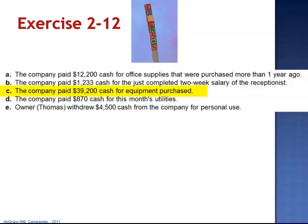Letter C: the company paid $39,200 in cash for equipment purchased. This transaction decreases one asset, cash, and increases another asset, equipment. Total equity remains unchanged. This is not an expense.